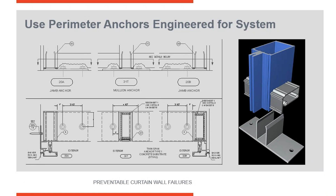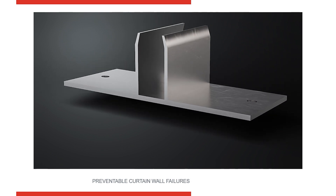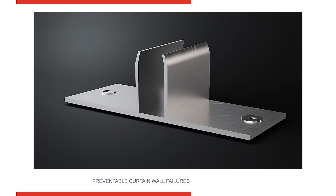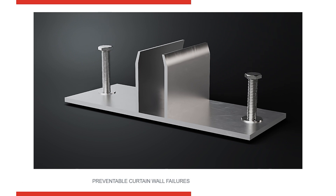Here you can see the T anchor. This is what you use at the top and bottom of intermediate vertical curtain wall members. It's designed to be hard fastened through these holes to the surrounding condition, then the vertical mullion drops down and free floats on top of it. Here's a very common type of anchor for a curtain wall system — the T anchor — with fasteners driving down and hard fastening it so it is secured.